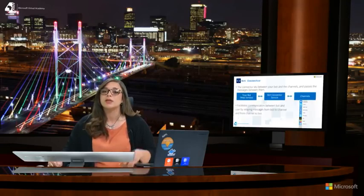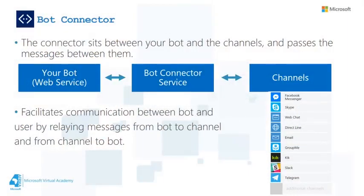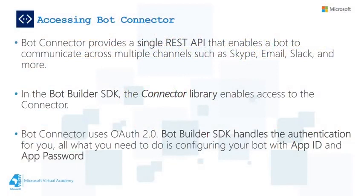The second pillar of the Microsoft Bot Framework is the Bot Connector. The Bot Connector sits between the Bot Web Service and the channels that the users use. It acts as the man in the middle that passes messages between the bot and the users through the channels, and also normalizes messages by converting them from the Bot Framework schema into the channel schema. The Bot Connector provides a REST API to enable your bot to communicate. To send a message from your bot to the connector, you must get an access token from the Microsoft account server. However, if you are using the Bot Builder SDK, the connector library enables access to the connector — all you need to do is configure your bot with the app ID and app password, which you get when you register your bot.